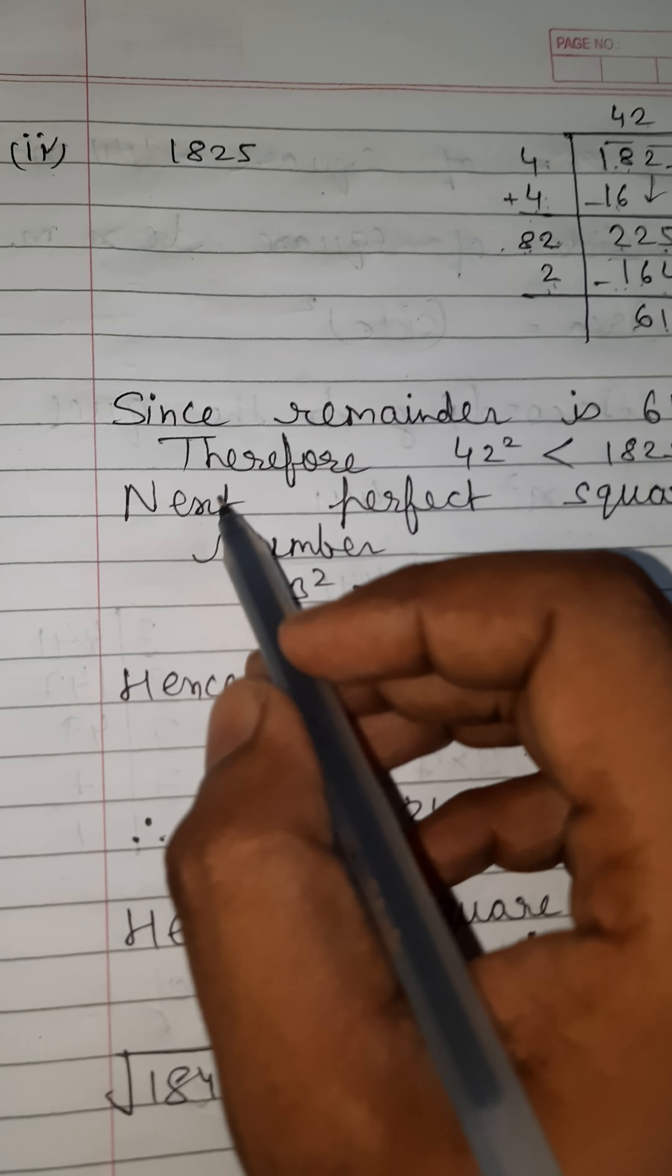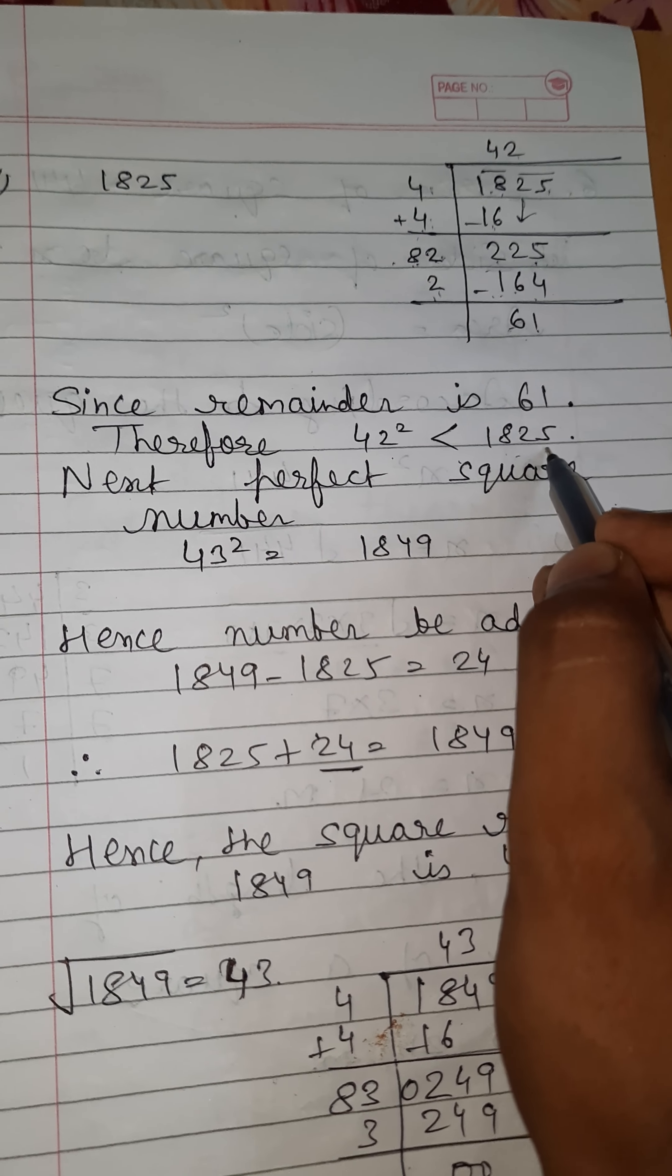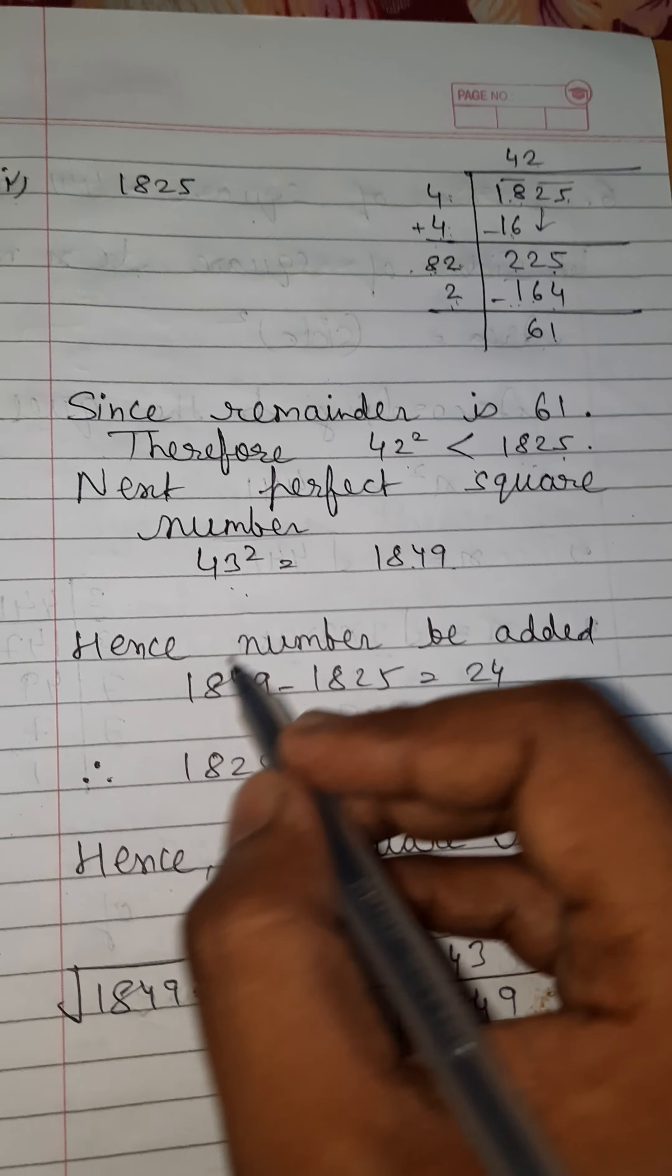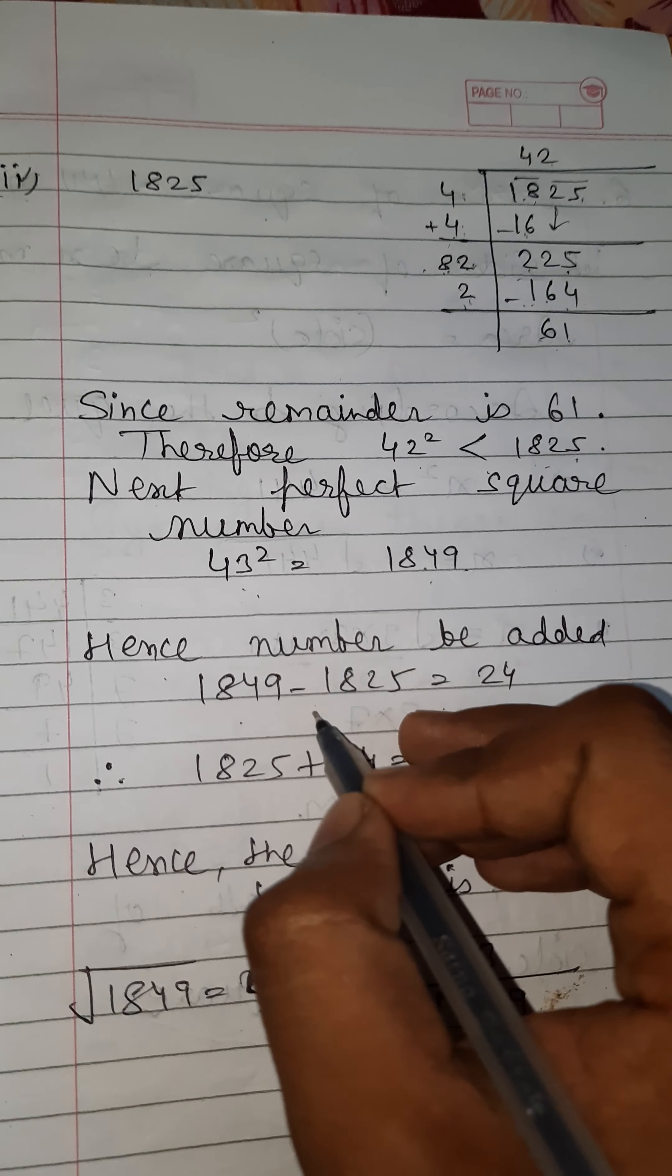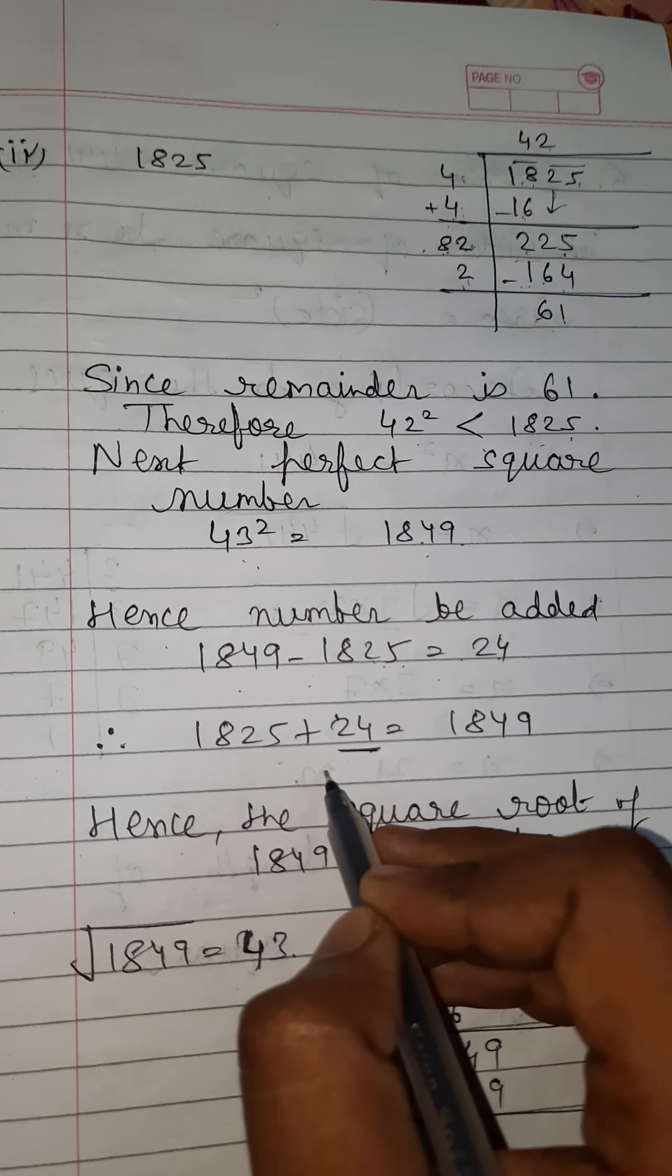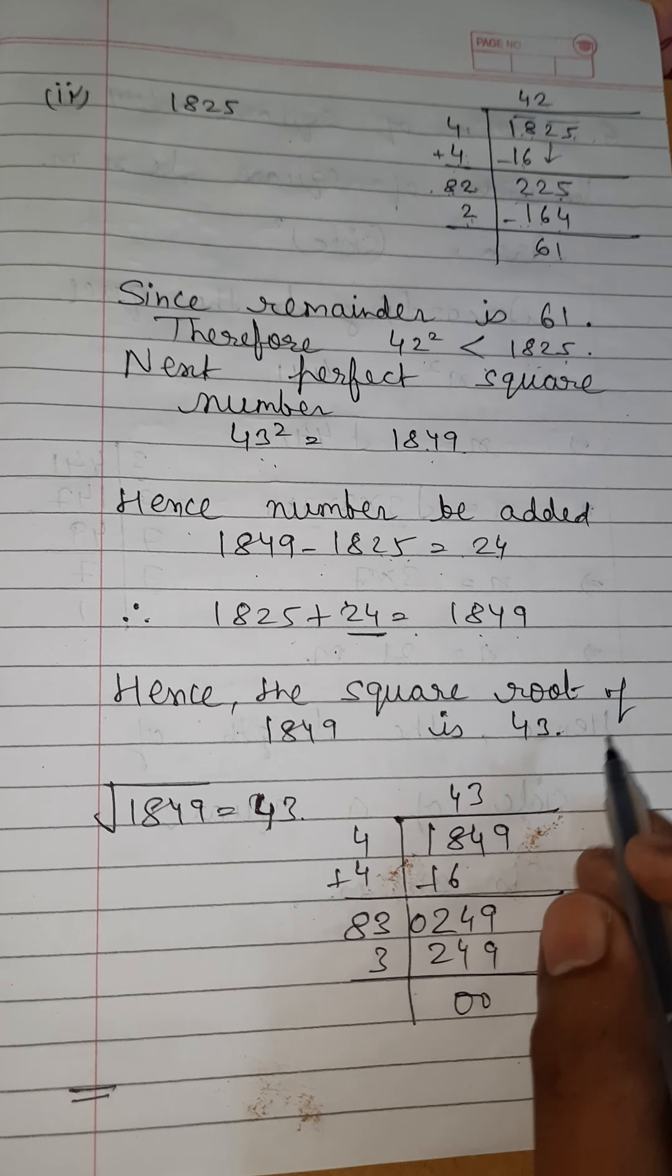2 times 2 is 4, and 2 times 8 is 16. Subtraction of 164 from 225 is 61. Since remainder is 61, therefore the square of 42 is less than 1825. The next perfect square number is 43, and the square of 43 is 1849. The least number that can be added is 1849 minus 1825, which equals 24. The sum of 1825 plus 24 is 1849. Hence the square root of 1849 is 43.